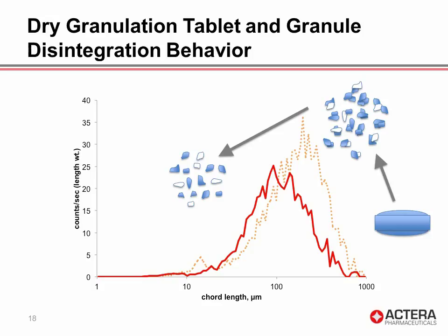For the tablet made by dry granulation, there is a shift in the distribution to the left, indicating the primary granules are breaking down further into finer particles. There is also a decrease in total particle counts, probably due to the active ingredient dissolving in water. This process is also illustrated in the figure provided on this slide.